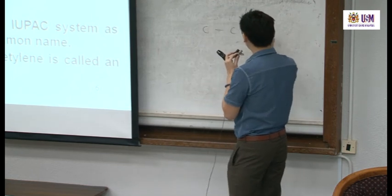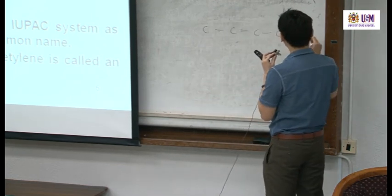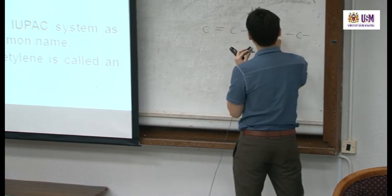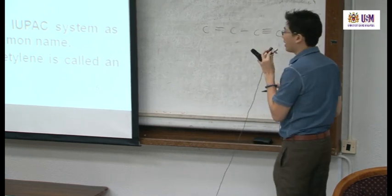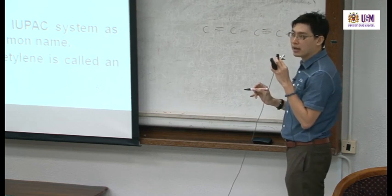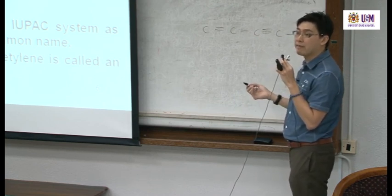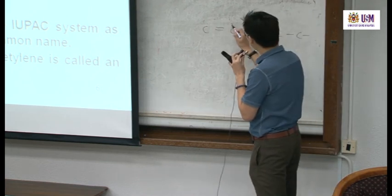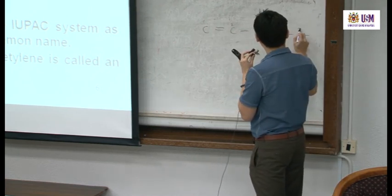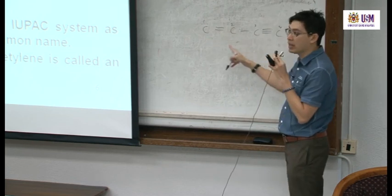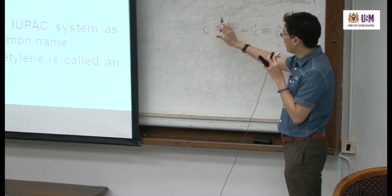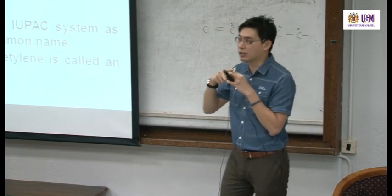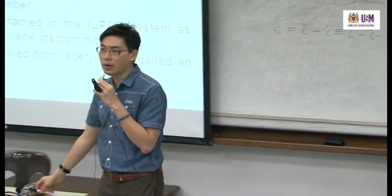Take an example: number the chain 1, 2, 3, 4, 5. You name the alkyne position first. Normally this type of question appears in objective format so you can work out which choice is correct.